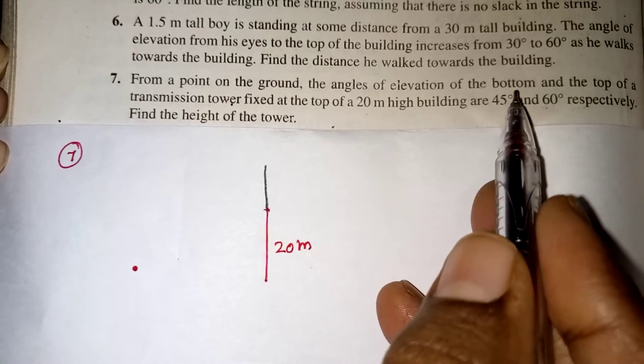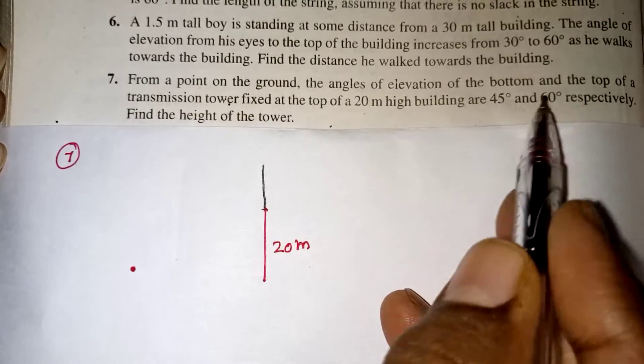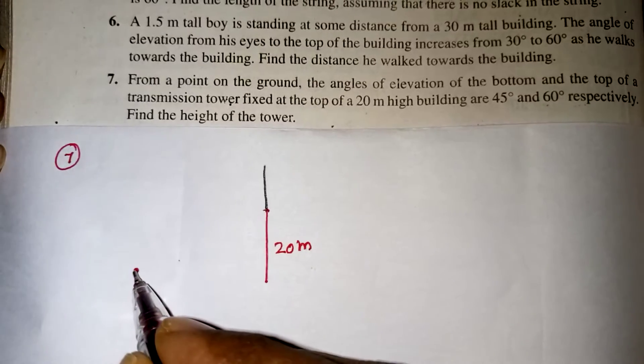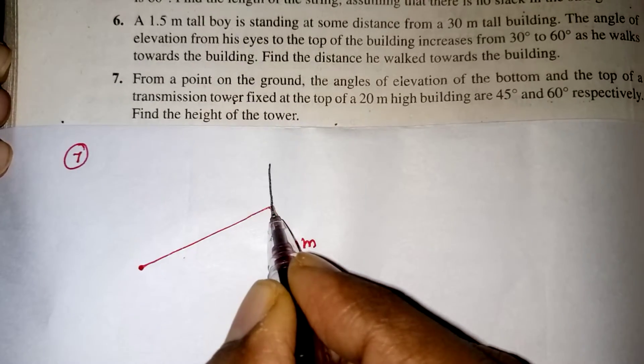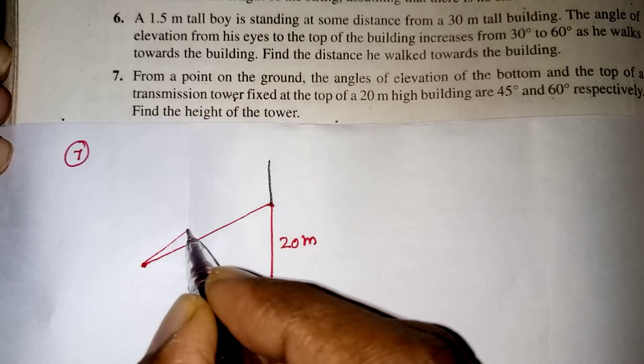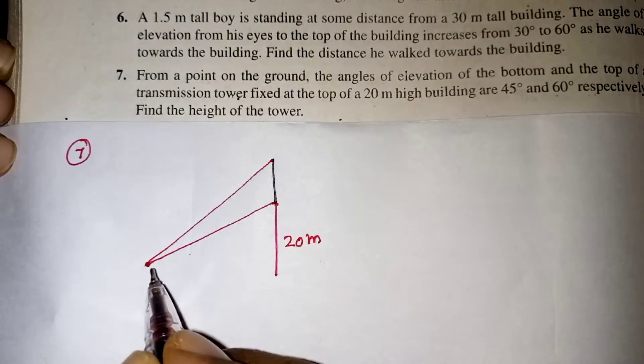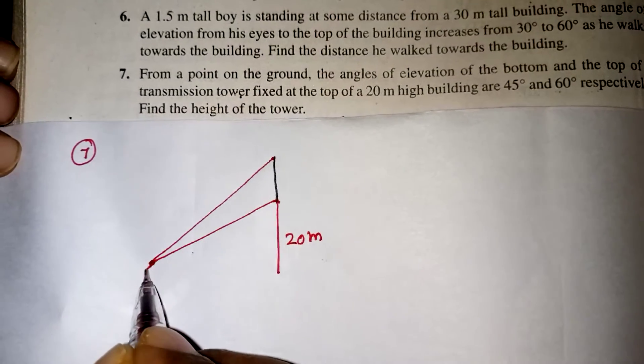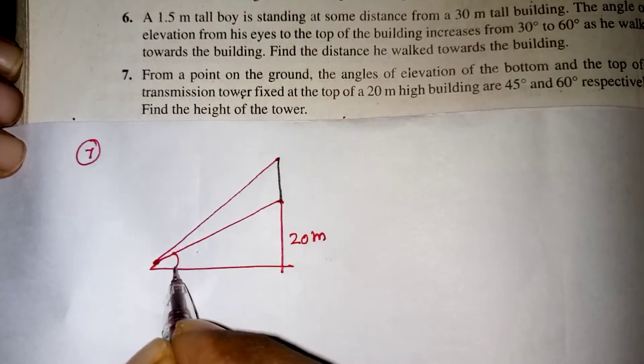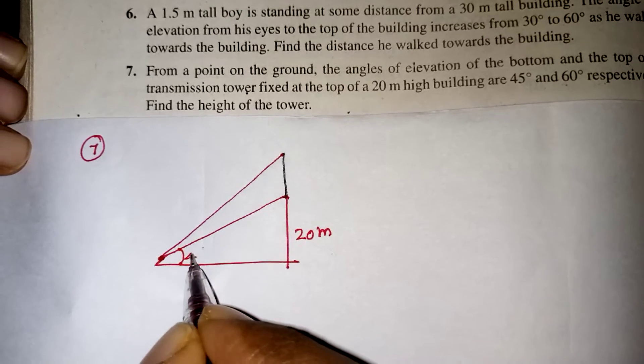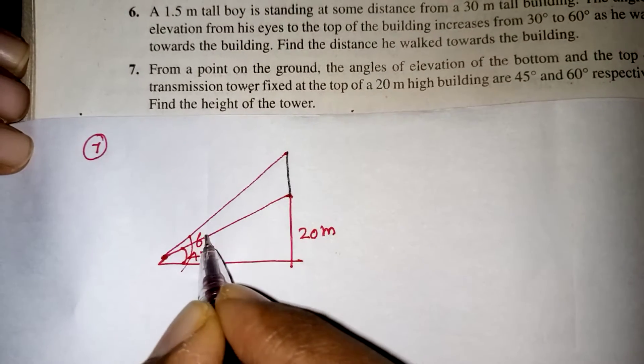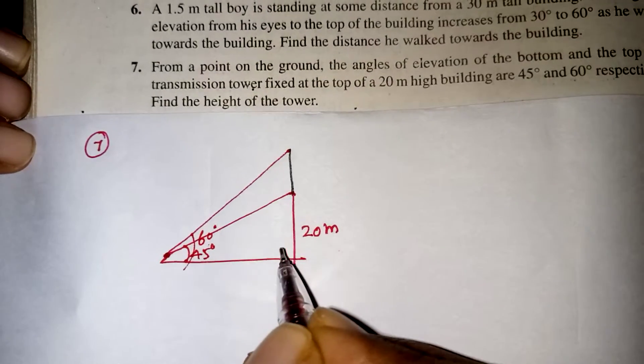The tower I am taking in with different color. So the black pen is a tower and the red color is a building. The building height alone 20 meter. Bottom and top, the elevation of the bottom is 45, top is 60. This is our ground, here this is bottom is 45 degree and the top is 60 degree.